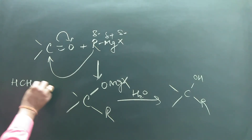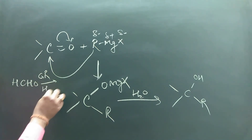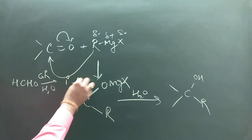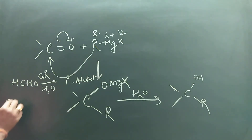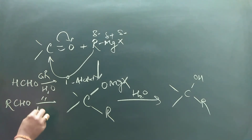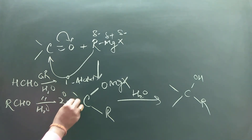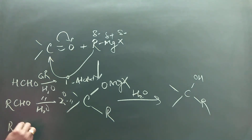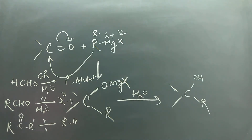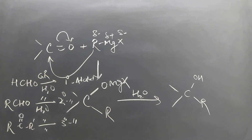Formaldehyde reacts with Grignard reagent and then hydrolysis gives a primary alcohol. Other aldehydes react with Grignard reagent and water to give a secondary alcohol. Ketones react with Grignard reagent to give a tertiary alcohol. So to summarize: formaldehyde → primary alcohol; other aldehydes → secondary alcohol; ketones → tertiary alcohol.